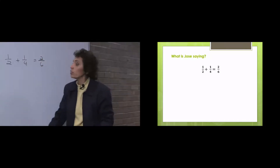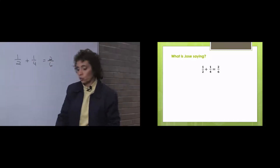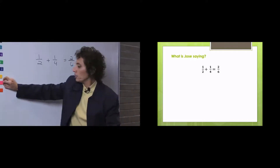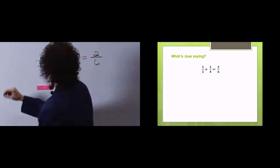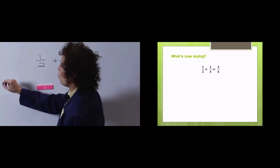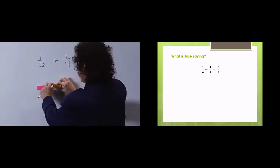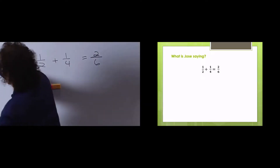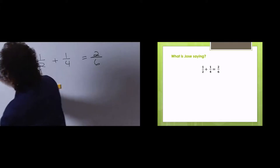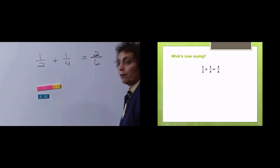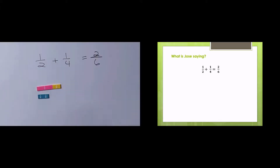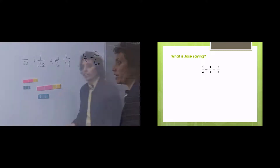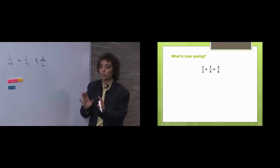Let's see if that works out. So I'm going to take the one half, and we have one half plus one fourth, and we're going to see if that equals two sixths. No, I don't think so. Not even close. So he's wrong. Let's talk about why he's wrong.